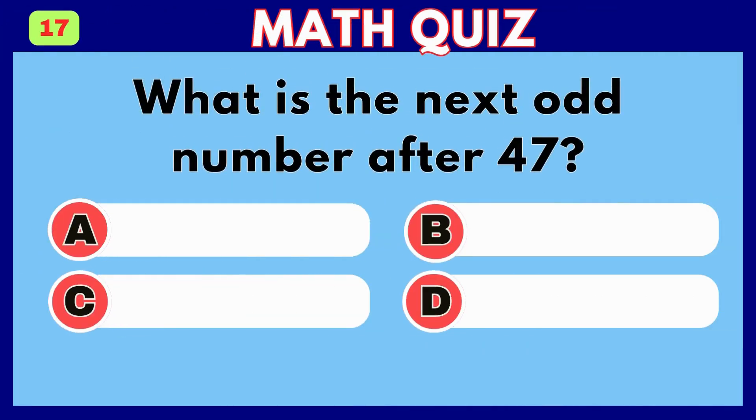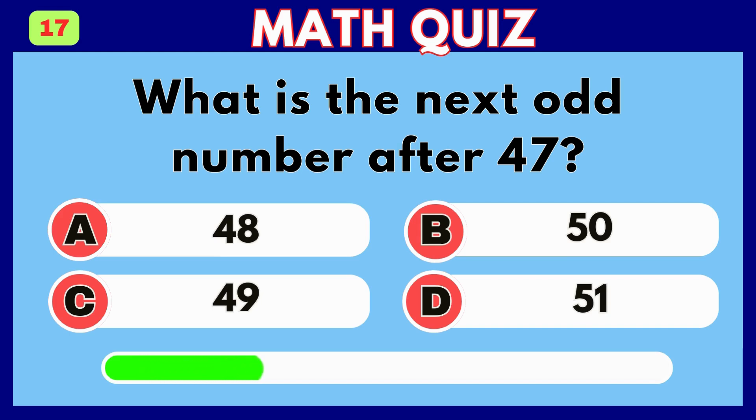What is the next odd number after 47? Answer C, 49.